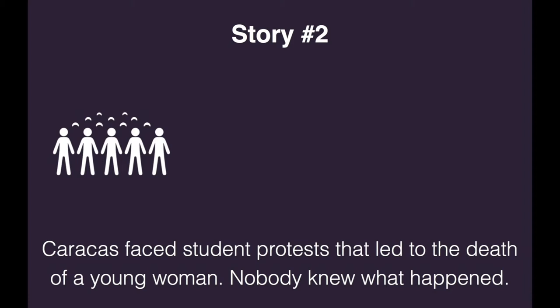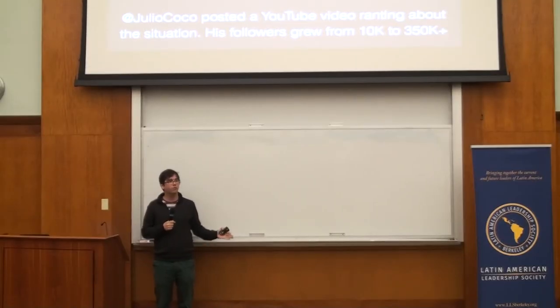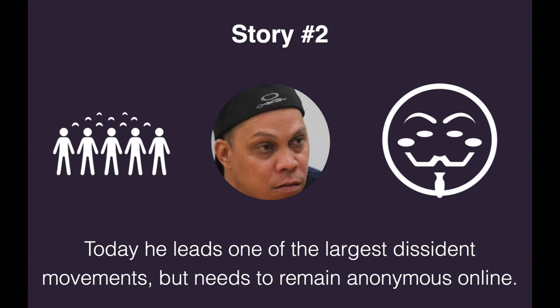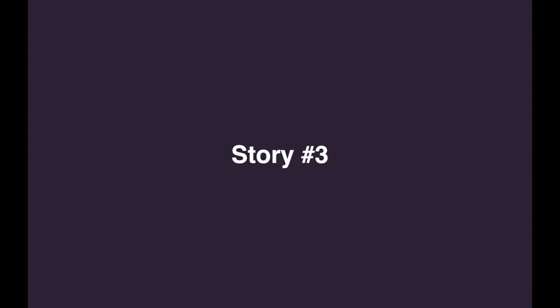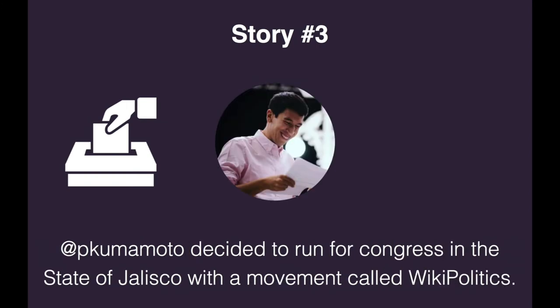Another story is from Venezuela. While there were big protests in Caracas in early 2014, a guy named Julio Coco grabbed his phone and shot a video ranting about the riots and a person killed by a random bullet. Amazingly, Julio Coco went from 10,000 to 350,000 followers on Twitter in one week. He does a lot of online activism but needs to remain anonymous, because if his name or his supporters' names are online, he risks persecution by the Venezuelan government. A similar case happened in Mexico: Pedro Kumamoto, a leader of the Wiki Politics Party, ran as an independent for the state of Jalisco and got elected — the first candidate with the same agenda as ours.